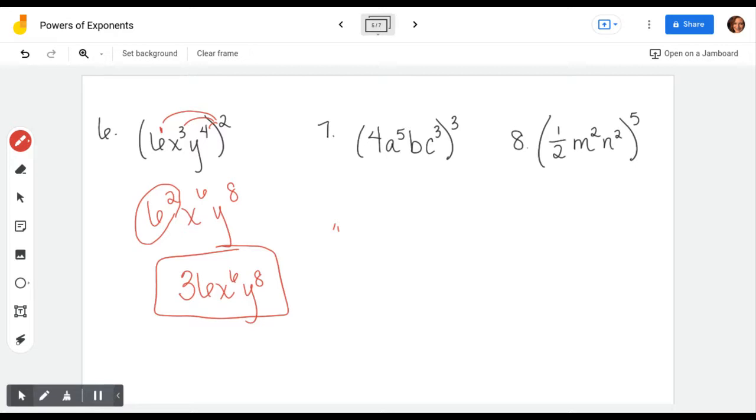Number seven, there's really a one there with the four, so I'm going to distribute exponent to exponent. There's a one there to exponent to exponent. That's going to become 4 to the third, a to the 5 times 3 is 15, b to the 1 times 3 is 3, and c to the 3 times 3 is 9. I'm going to clean it up a little. 4 to the third means 4 times 4 times 4, that would be 64, a to the 15th, b to the third, c to the ninth.